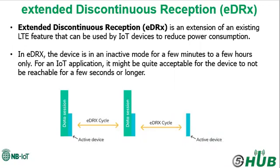eDRX works by extending the time of regular DRX. During eDRX, the device remains always attached to the network, and at least 100 bytes of packages terminated to the device are forwarded once the receiving section is awake again. The DRX time can be configured up to 175 minutes for narrowband IoT and around 45 minutes for LTE-M, but this has an impact on data reception.